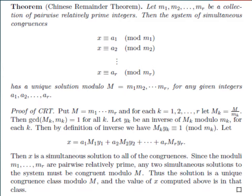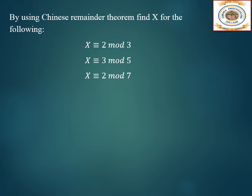We will work out numericals based on Chinese remainder theorem so you will be able to understand exactly what it is. Let us solve a numerical: three equations are given. We have to find x where x is congruent to 2 mod 3, x is congruent to 3 mod 5, and x is congruent to 2 mod 7.